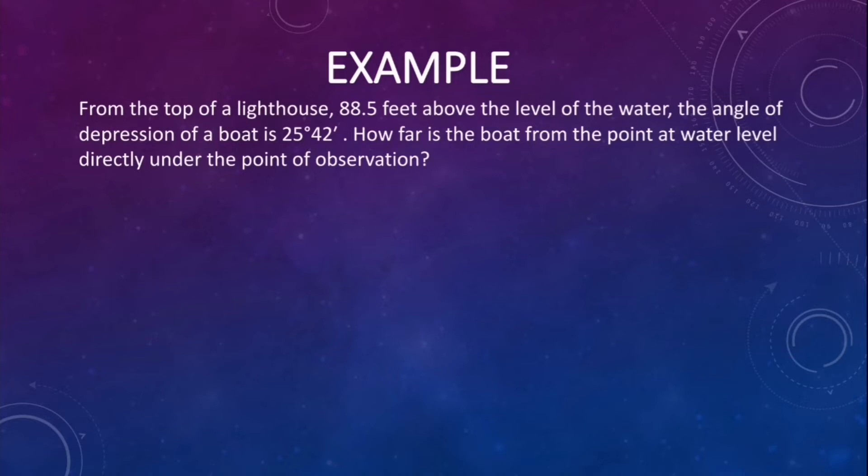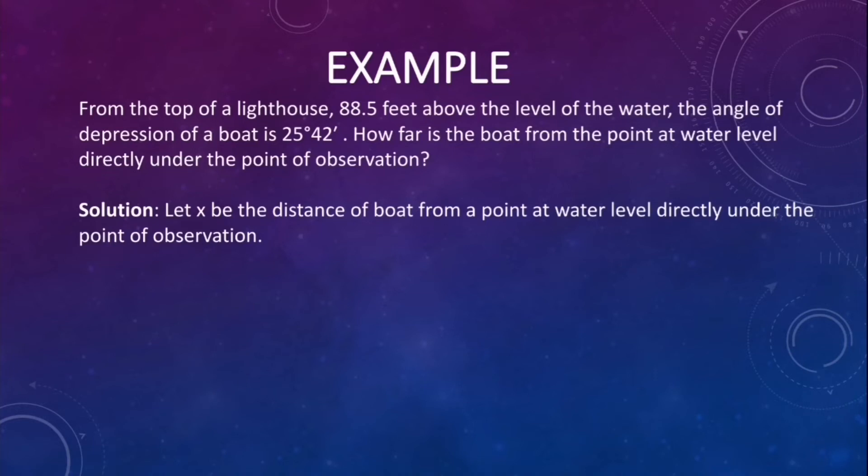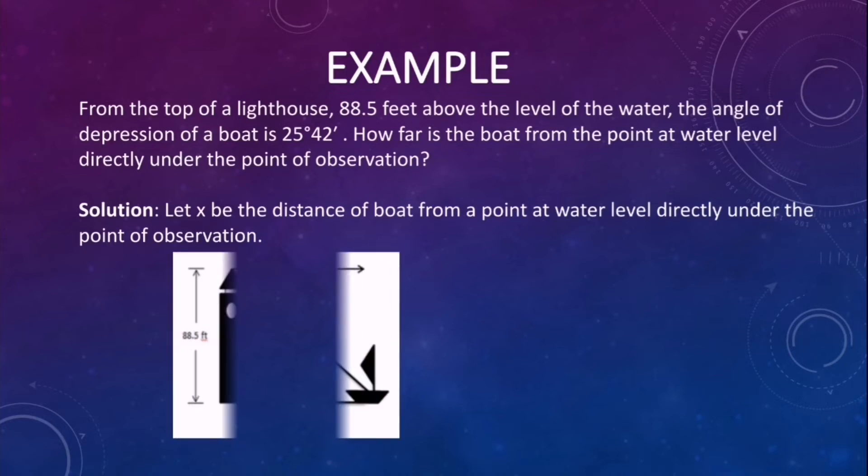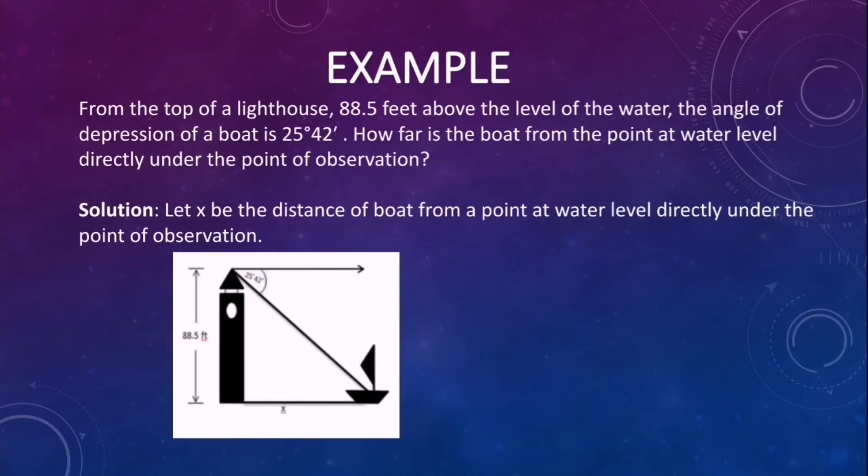We can see that the angle of depression is already given. What is asked is how far is the boat from the point at water level directly under the point of observation. So here, our solution would be: let x be the distance of the boat from a point at water level directly under the point of observation.